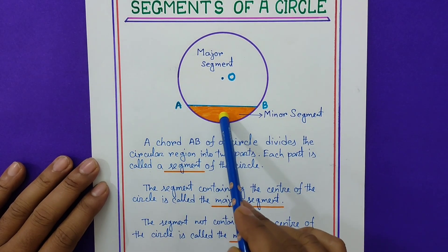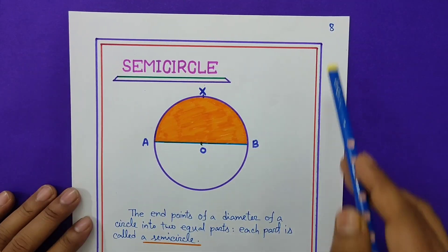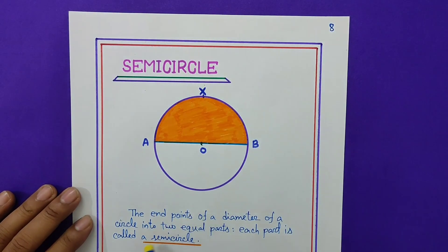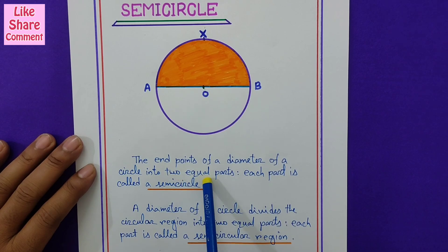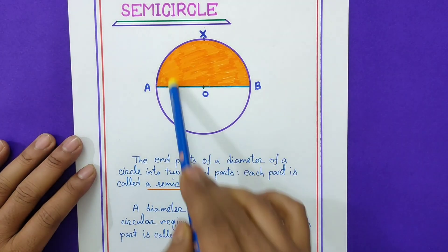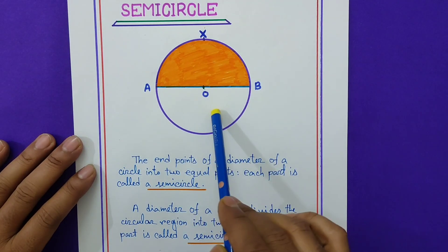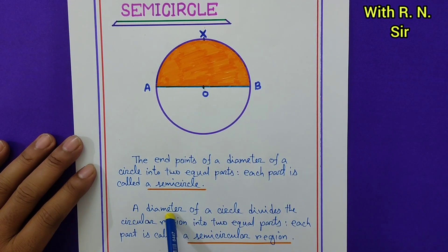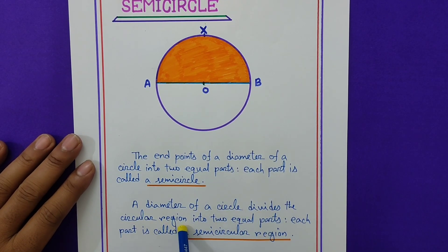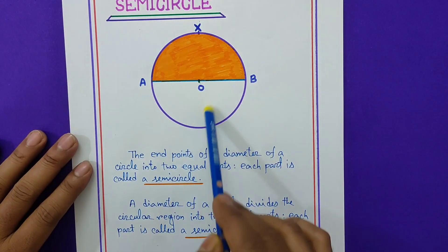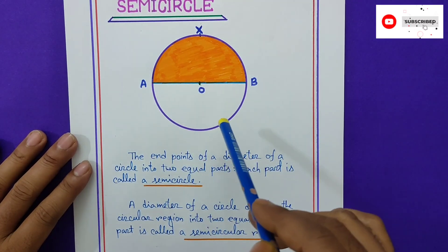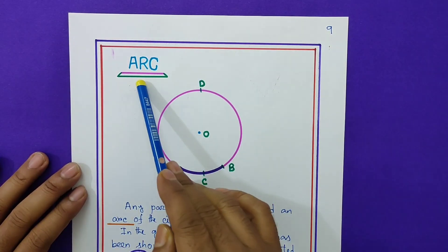Page number 8: semicircle. The endpoints of a diameter divide a circle into two equal parts; each part is called a semicircle. A diameter of a circle divides the circular region into two equal parts; each part is called a semicircular region — meaning these two parts are the two semicircular regions.